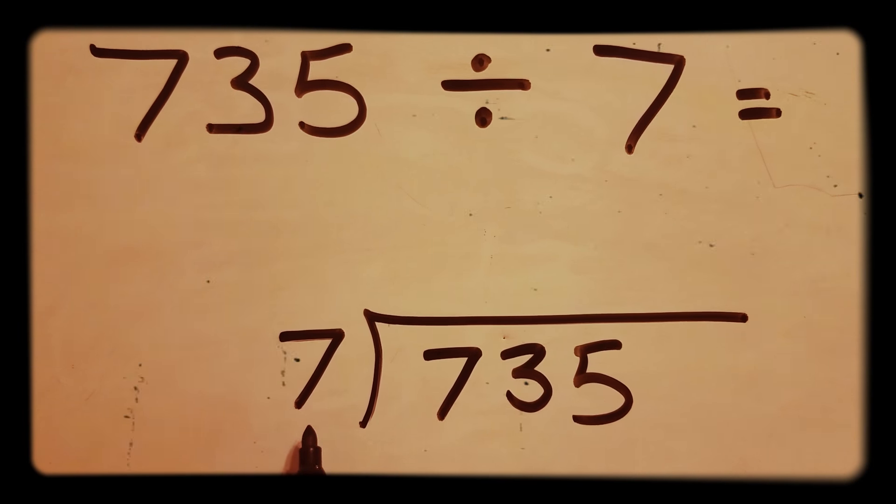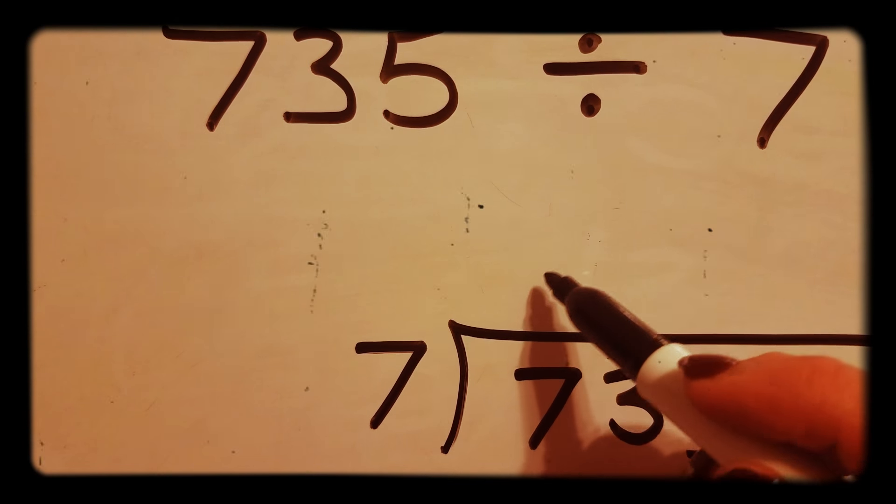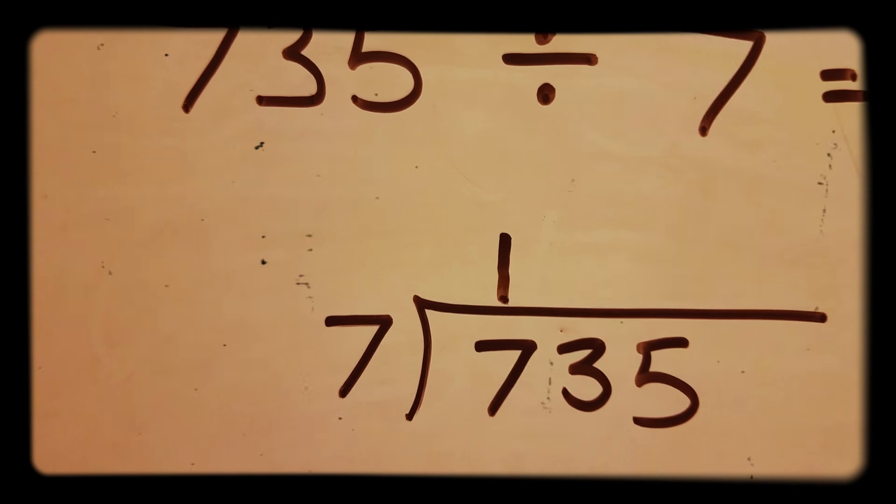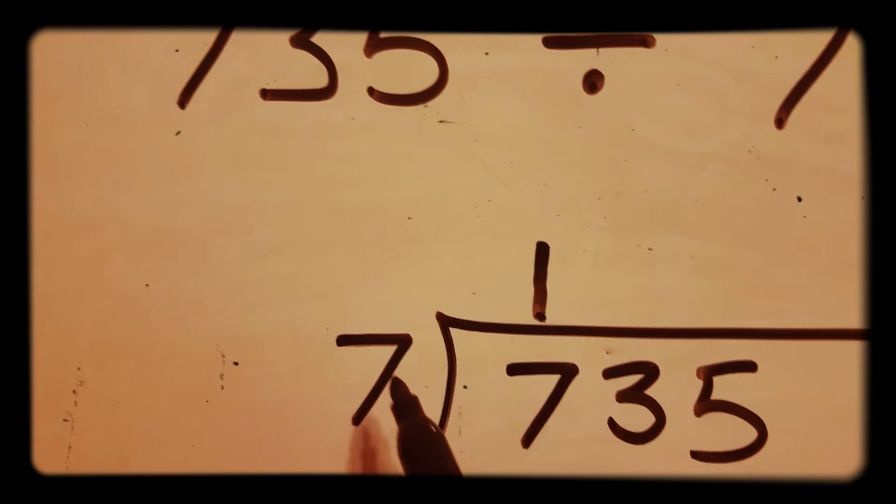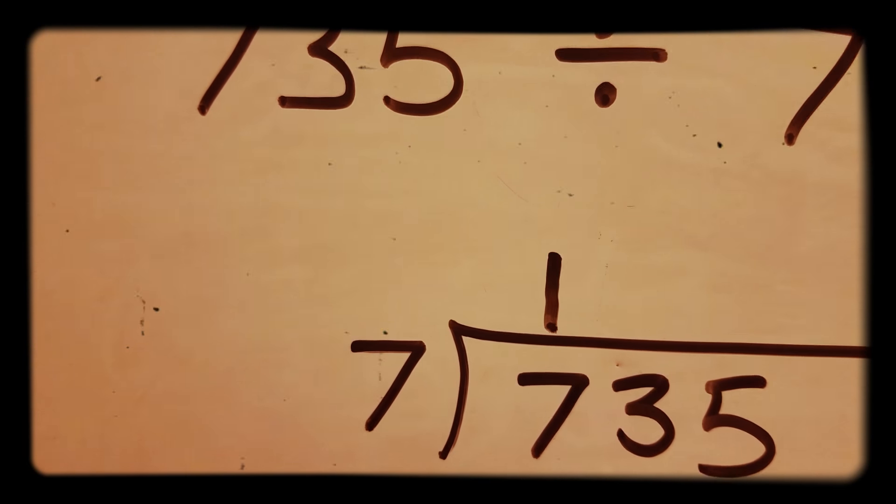How many times can 7 go into 7? One time. So you put the 1 directly over the 7. Now multiplication: 7 times 1, that's 7.